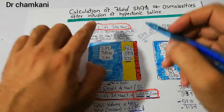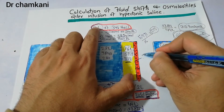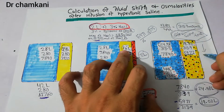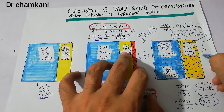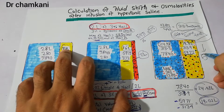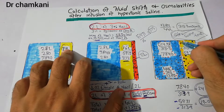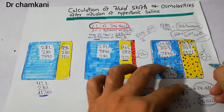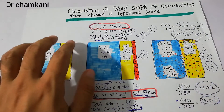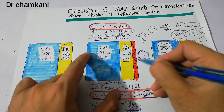After infusing only 2 liters of fluid into the extracellular compartment, the ECF volume increased by approximately 5 liters — from 14 liters to 19.02 liters. This dramatic increase is because the hypertonic saline drew water out of the intracellular compartment into the extracellular space.